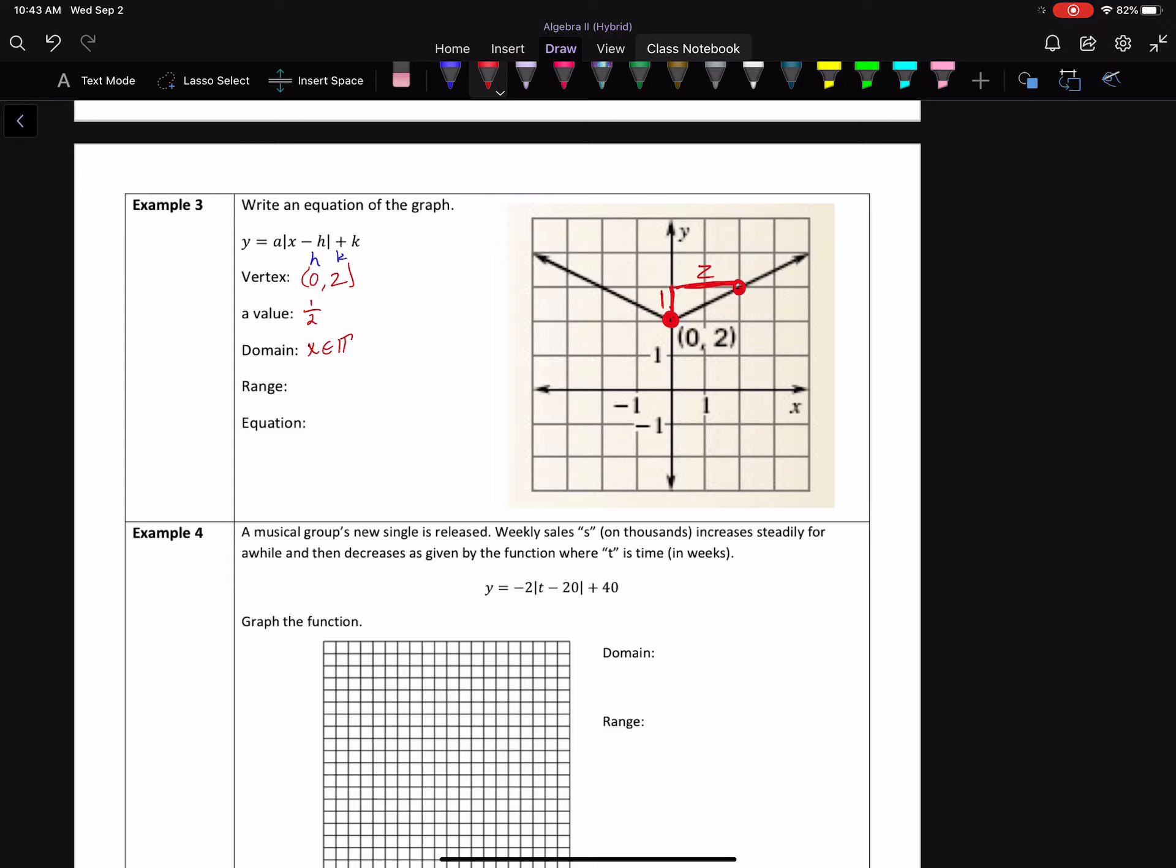Domain x is always going to be in the real numbers. What values are coming out of this? Well, y is going to be what compared to my k value, my 2. Well, it looks like I'm going to be above, so I can say greater than or equal to. Last but not least, the equation, plug in A, H, and k. So y equals 1 half times the absolute value of x minus 0. That's my H value. Plus 2. Or, probably a better way and a more preferred way, y equals 1 half times the absolute value of x. Plus 2. There you go.